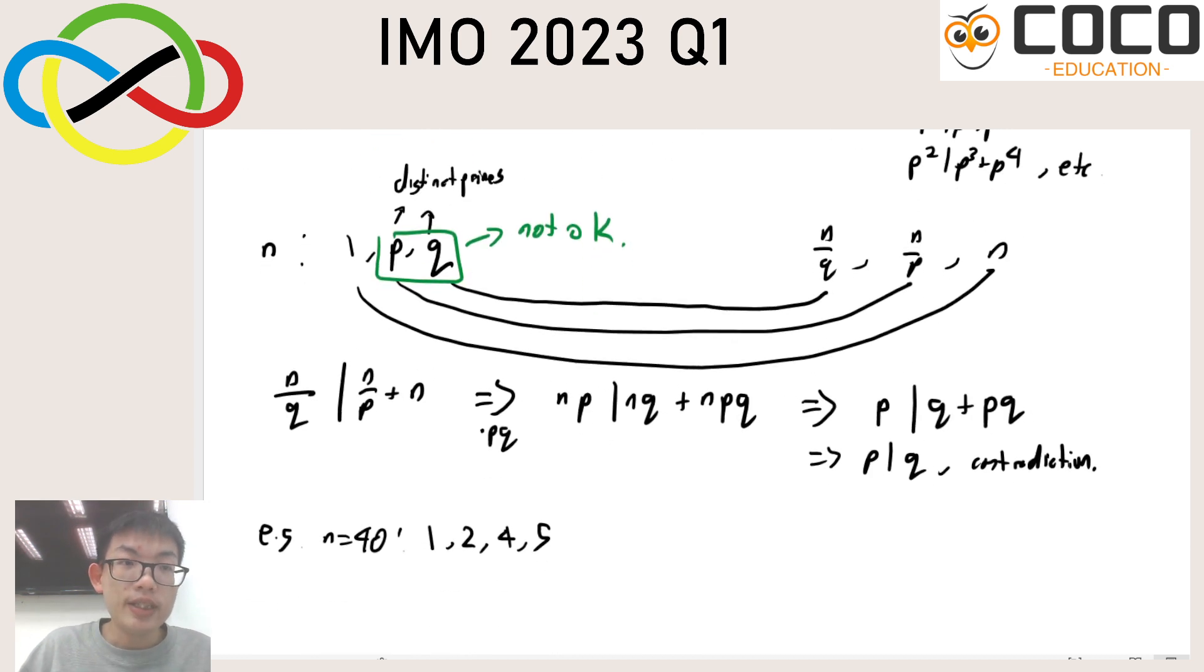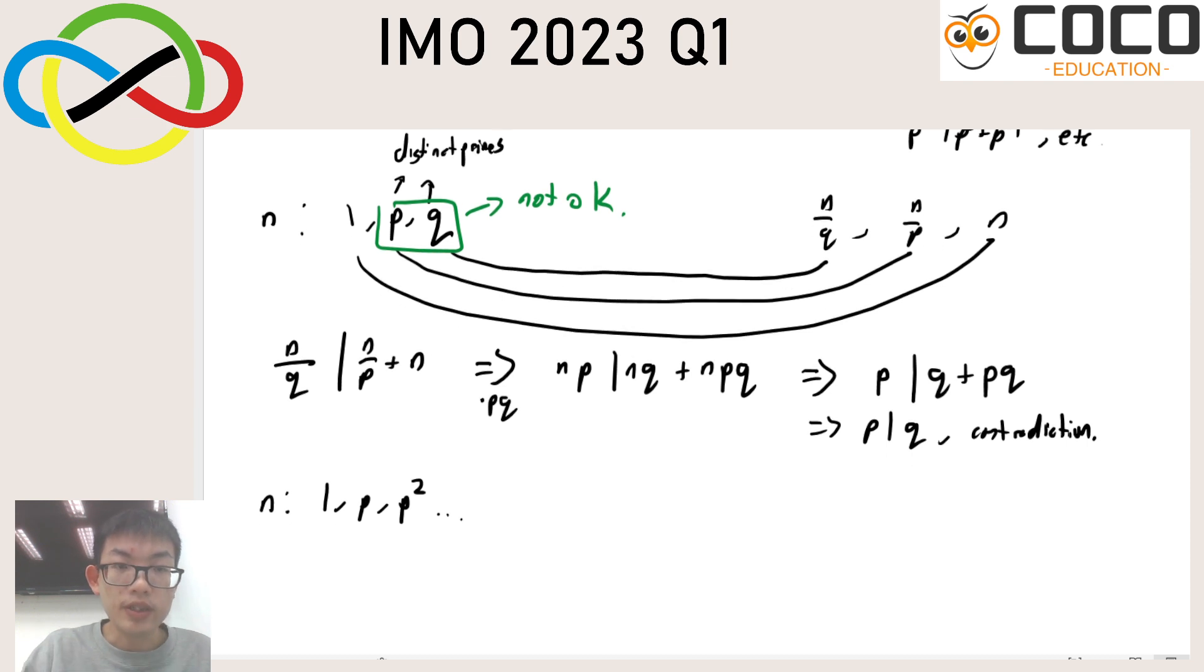So just because p and q doesn't work here doesn't mean that we are already done and only get prime powers. It does however mean that the only possibility is that the first two other factors after 1 must be just p and p square, because if you have got the factor down here has pq then q should have appeared earlier because pq would be bigger than q. So you cannot introduce a product of primes before getting the prime itself. So if it's not p and q it must be p and p squared.